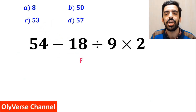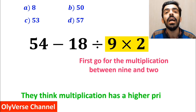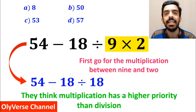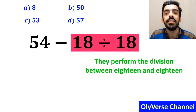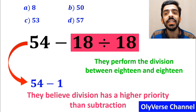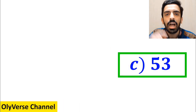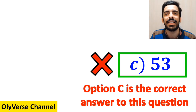Some other people first go for the multiplication between 9 and 2 because they think multiplication has a higher priority than division. So they rewrite this expression as 54 minus 18 divided by 18. In the next step, they perform the division between 18 and 18, and simplify this to 54 minus 1, which gives them the answer 53. They quickly say that option C is the correct answer. But I have to say, we were tricked and it's not the correct answer.